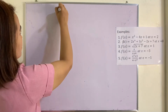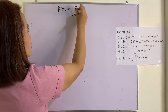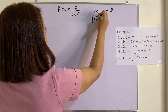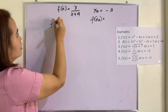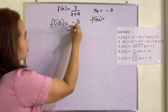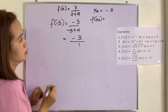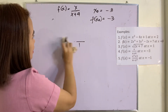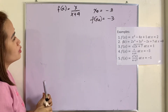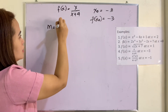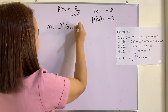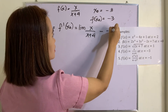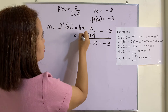Example number 4. We have F(x) equal to x over x plus 4. Our x₀ is equal to negative 3. Let us find F(x₀): F(negative 3) equals negative 3 over negative 3 plus 4, which is negative 3 over 1, so F(negative 3) equals negative 3. Now let us get the derivative: M or F prime of x₀ equals the limit of x over (x plus 4) minus negative 3, over x minus negative 3, as x approaches negative 3.